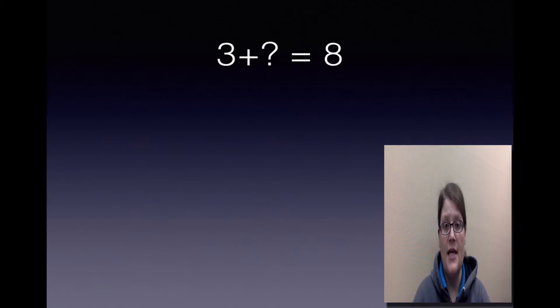3 plus what missing addend equals 8. We're going to start with 3, and we're going to do what? That's right, we're going to count on. When will we stop? When we get to the sum of 8. So here we go: 3, 4, 5, 6, 7, 8.